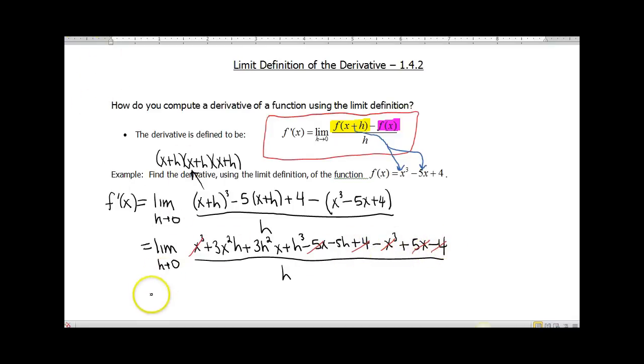Let's see what we have left. We have the limit as h approaches 0, we have 3x²h + 3h²x + h³ - 5h, and this is all divided by h.